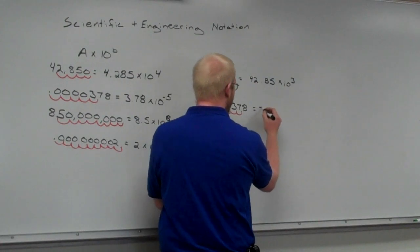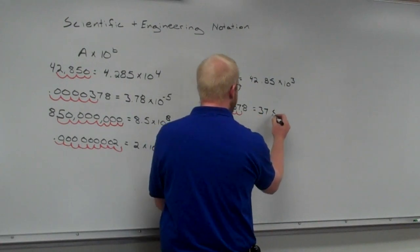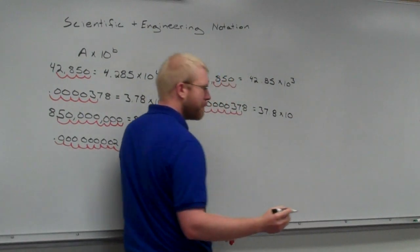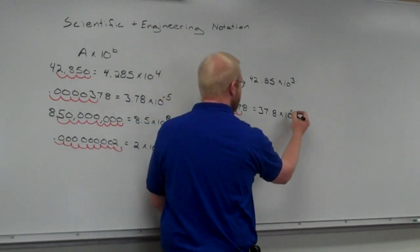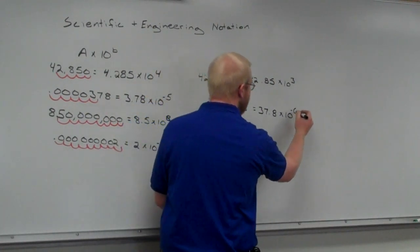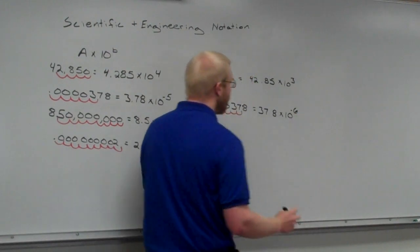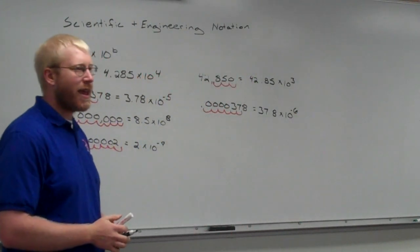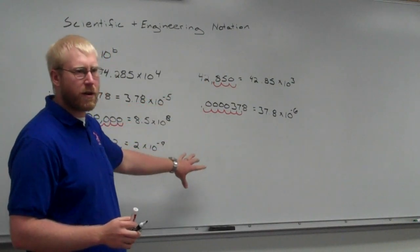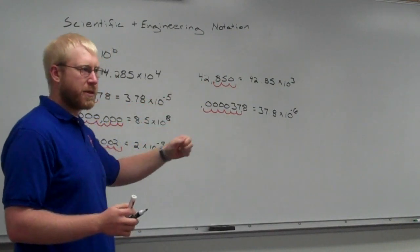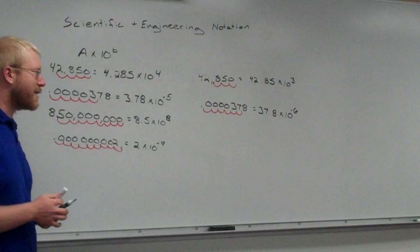So, this is going to equal 37.8 times 10. What's my exponent going to be? Negative 6. Negative 6 because I have to move 6 places. I can make that 6 look good. Times 10 to the negative 6. Engineering notation making sense so far? Yep. Just multiples of 3 is the main difference between that and the scientific.